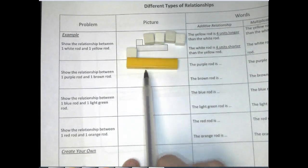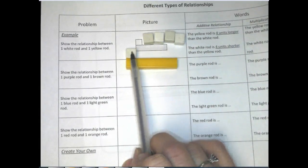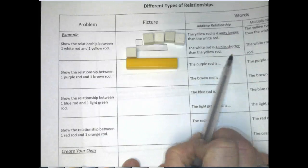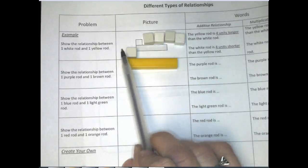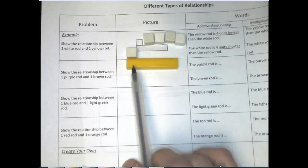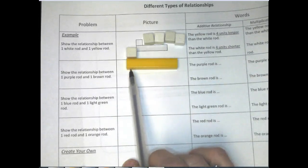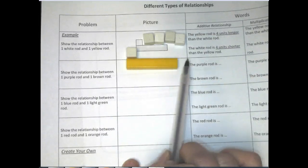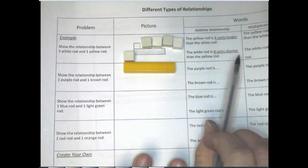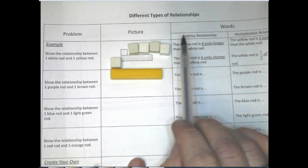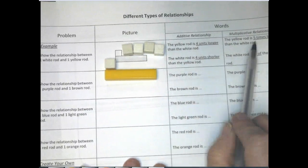If we talk about yellow, we can also talk about white. We can say that a white rod is four units shorter than the yellow. So that's additive.